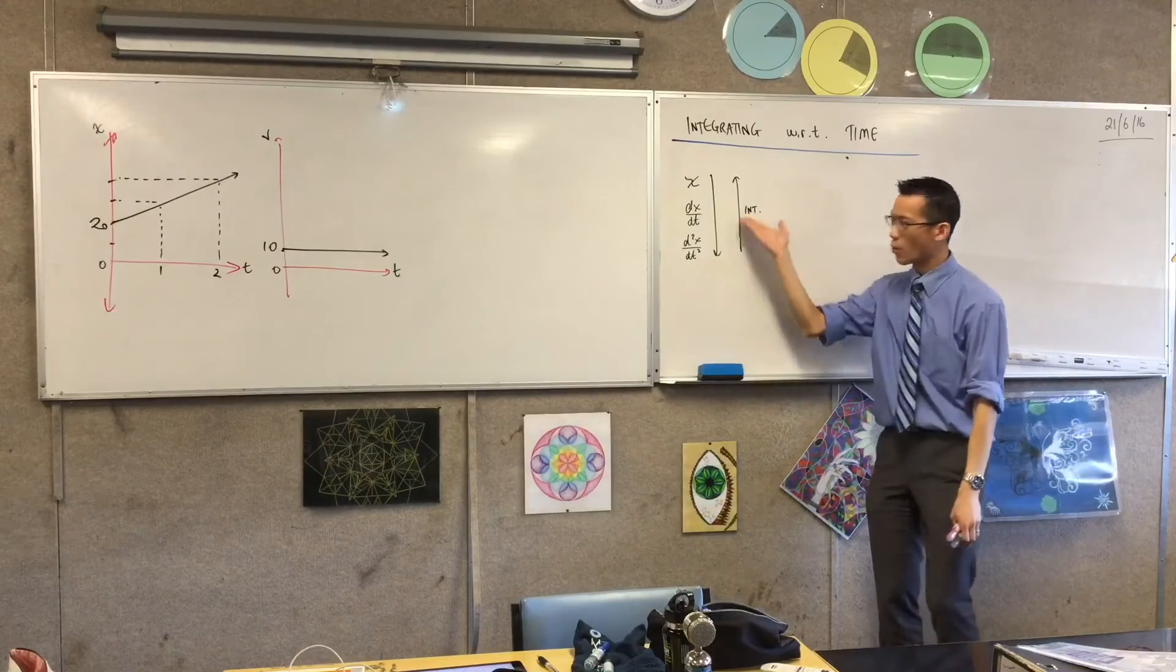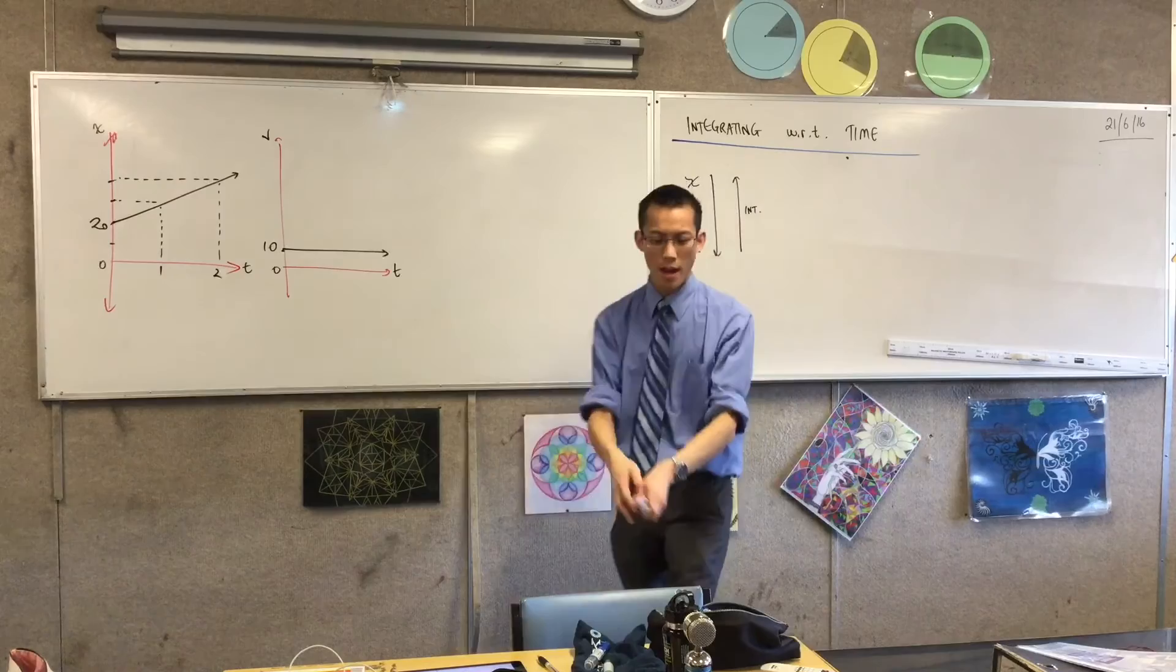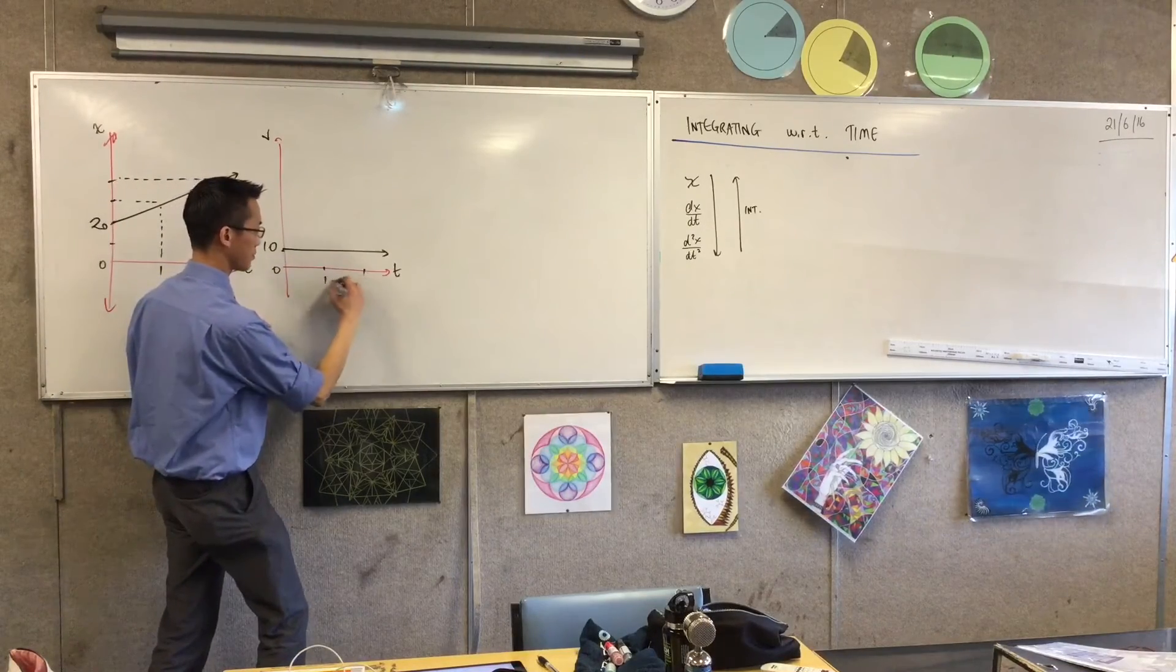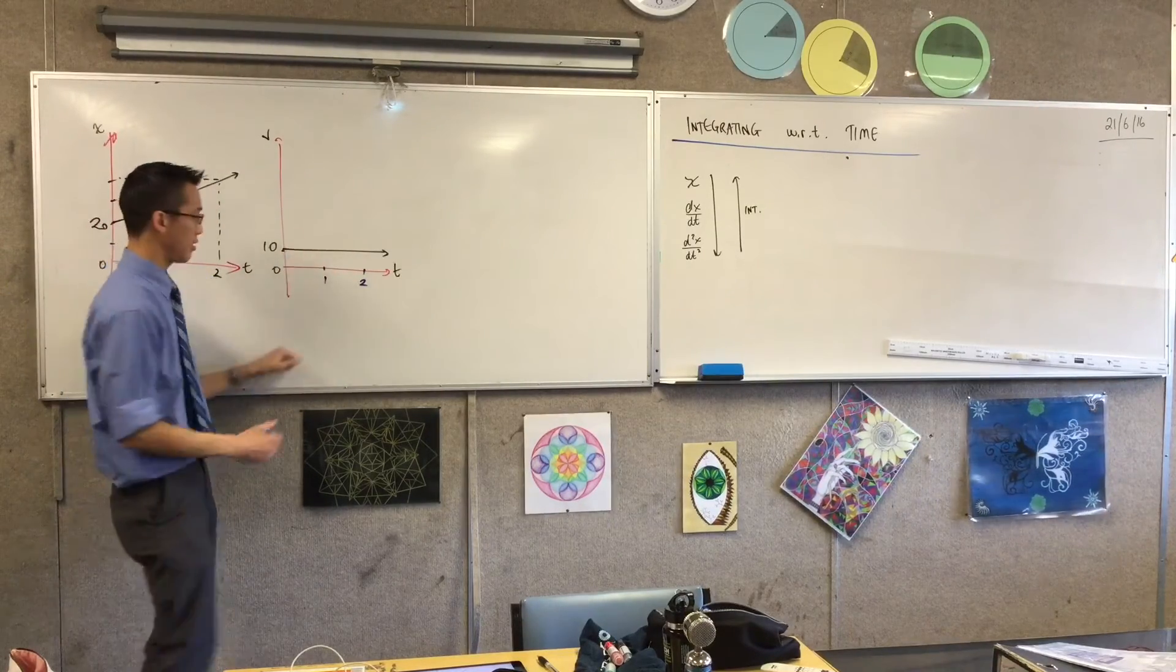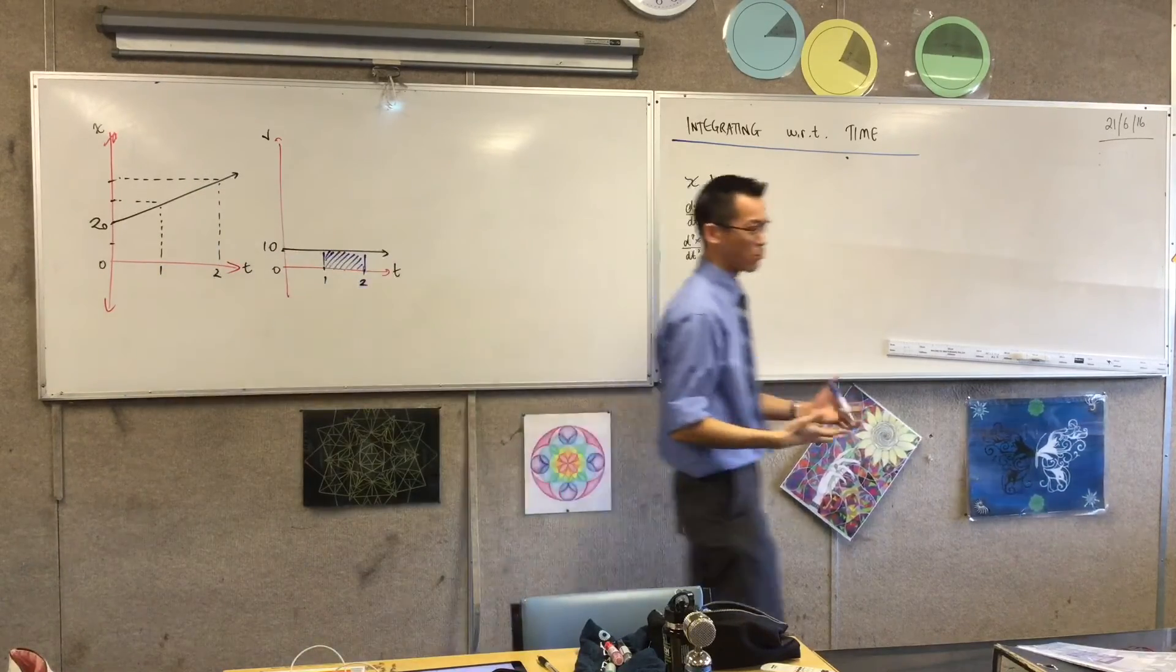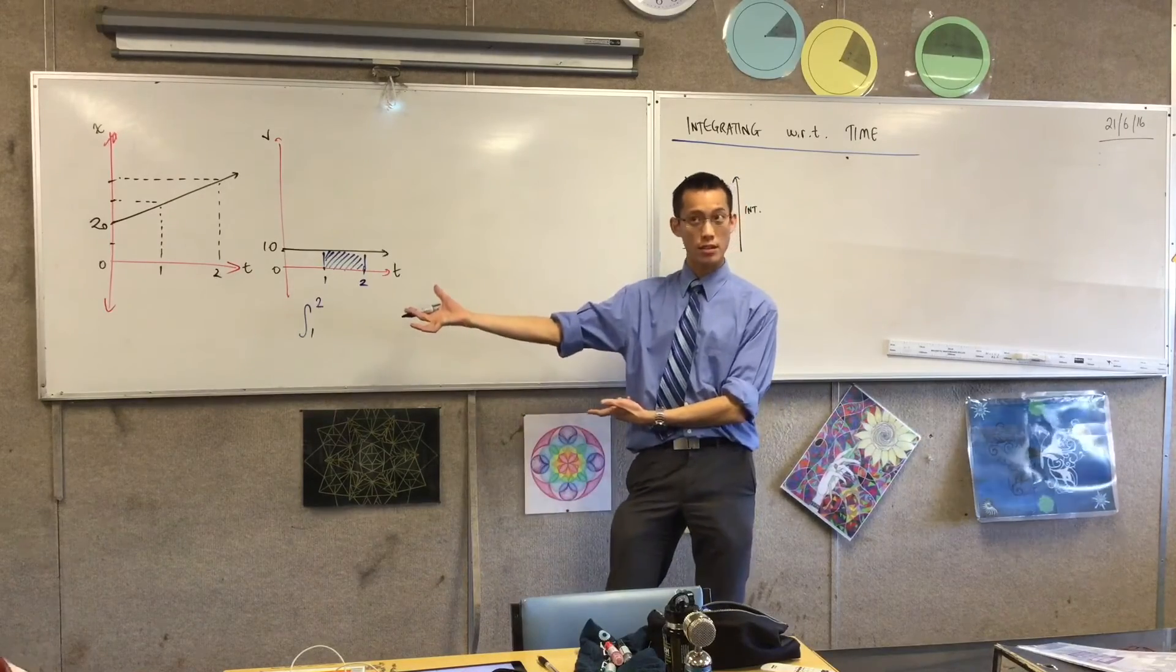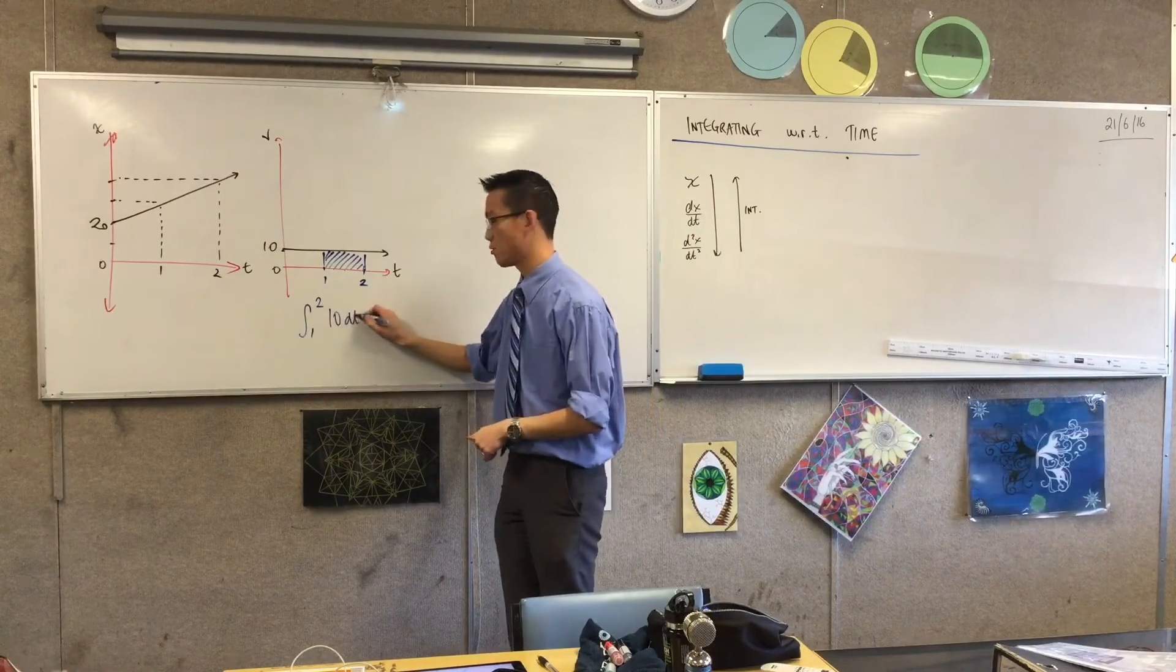Now what I want to do in trying to work out what on earth this integration area business has to do with this, I just want to think about particular areas under curves. For instance, I've got time one, one hour, two hours. Let's put those guys on as well. Now if for instance I integrated from one to two underneath the velocity graph, I would get this area. Now how would I actually write this? This is just an integral, an integral from one to two. In this case, the function I'm integrating is 10. It's just 10. It's always 10. 10 with respect to time. Do you agree?